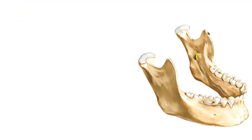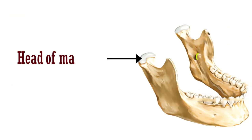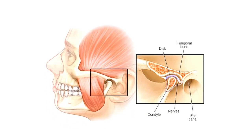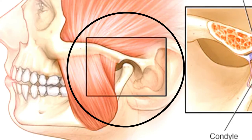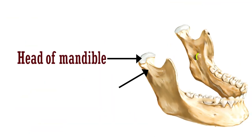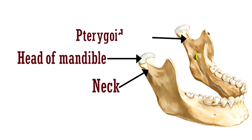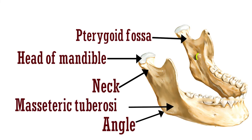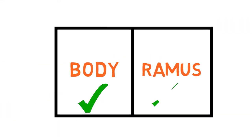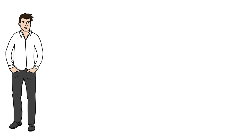The condylar process has the head of mandible, which articulates with the articular fossa of the temporal bone to form the temporomandibular joint. Just below the head is the neck of the mandible, and on the anterior surface of the neck we have the pterygoid fossa. Lastly, the angle of the mandible bears the masseteric tuberosity on its outer surface. With this we complete all the anatomical features of the mandible.